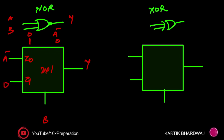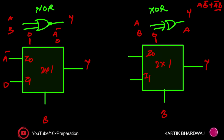Now for the XOR gate: inputs a and b, y is the output, b as select line on the 2x1 MUX. The XOR equation is a·b-bar + a-bar·b. When b is zero, zero XOR any input gives a — so output is a. When b is one, one XOR a gives a-bar — so output is a-bar. Therefore I0 is a and I1 is a-bar for the XOR gate.